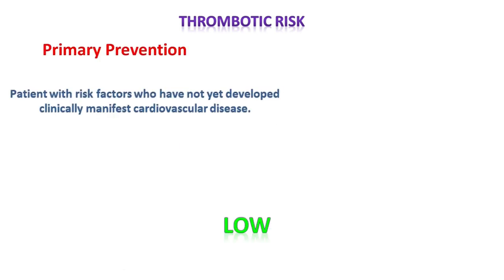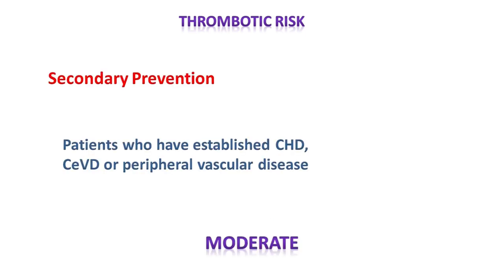Patients in low thrombotic risk are those who take antiplatelet drugs as primary prevention — people with risk factors who have not yet developed clinically manifest cardiovascular disease. Normally these patients are under aspirin. In moderate risk, we have patients who take the drug as secondary prevention: those with established CHD, cerebrovascular disease, or peripheral vascular diseases. These patients may be under aspirin or clopidogrel, rarely both.